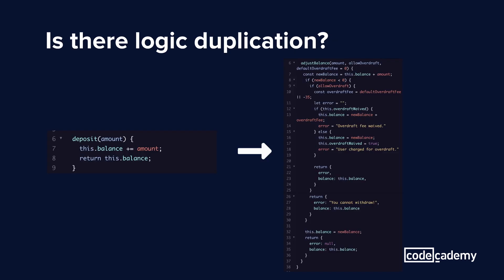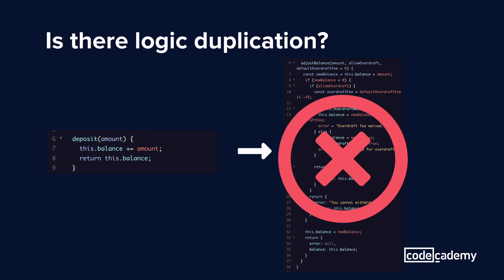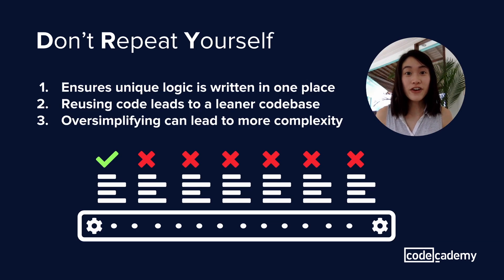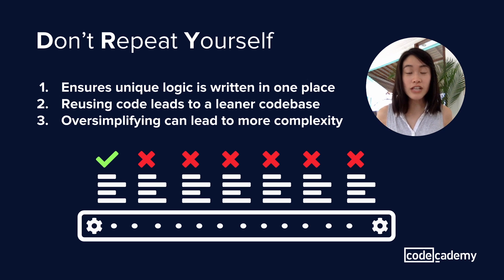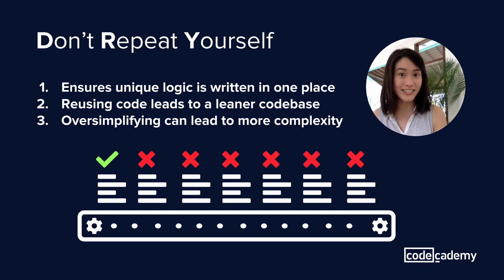We've gone from a simple deposit function to this monster, and you can see how much more difficult it is to read. Coming back to the purpose of DRY — to eliminate logic duplication — helps answer the question: should I remove the duplicate code here? Back in our example, we can ask ourselves: will removing duplicate code make it DRY-compliant? Is there logic duplication? And the answer is no. Deposits and withdrawals are two separate pieces of logic.